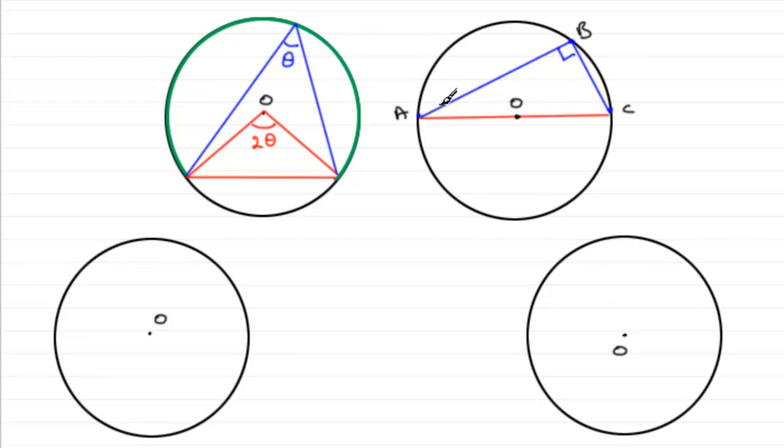If you can show that the gradient of a, b and the gradient of b, c are perpendicular, remember the product of the gradient should come to negative one. If you get a case like that, then you know that a, c must be the diameter.